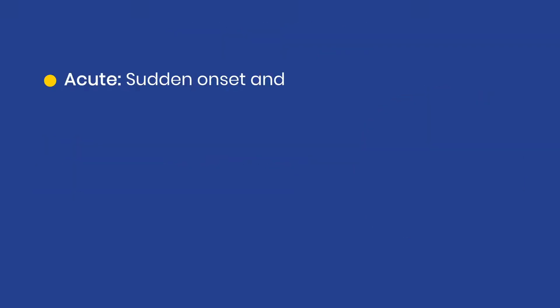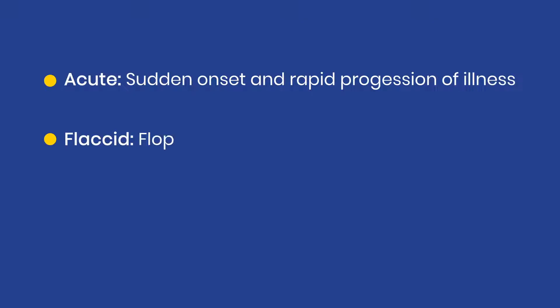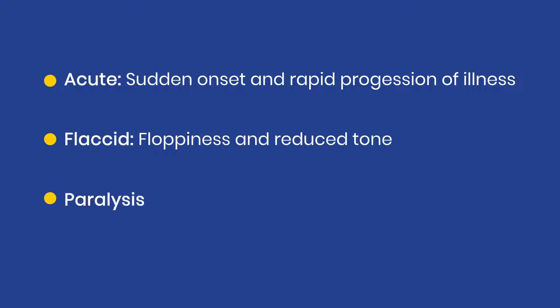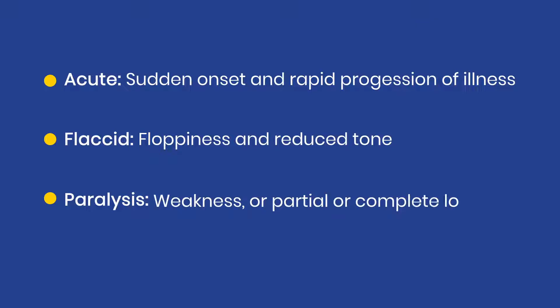Acute refers to sudden onset and rapid progression of illness. Flaccid refers to floppiness and reduced tone. Paralysis refers to weakness or partial or complete loss of power of the affected part.